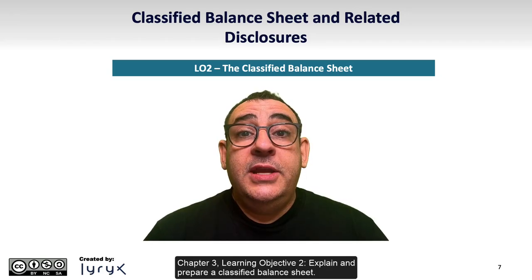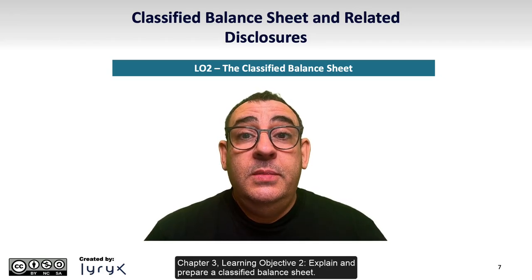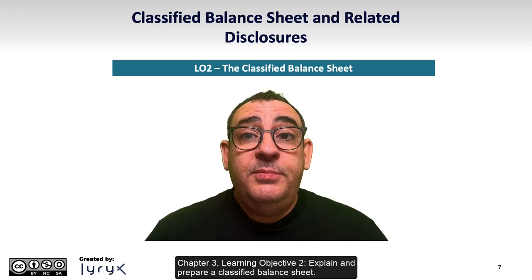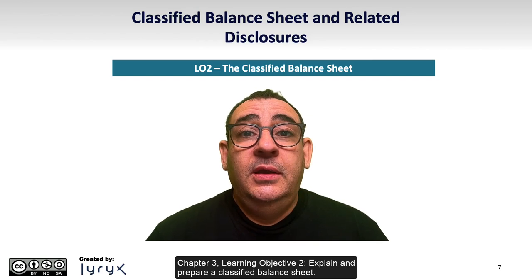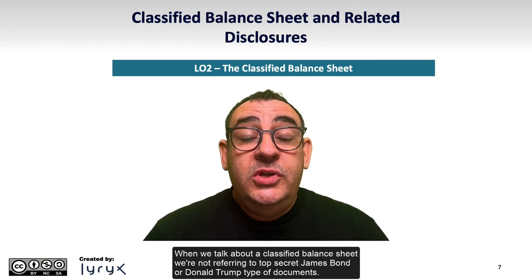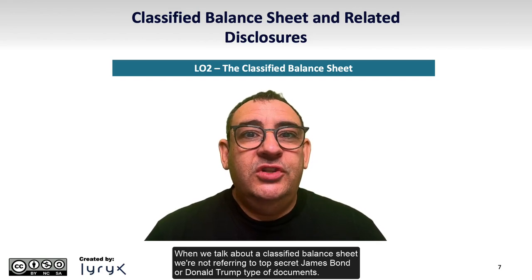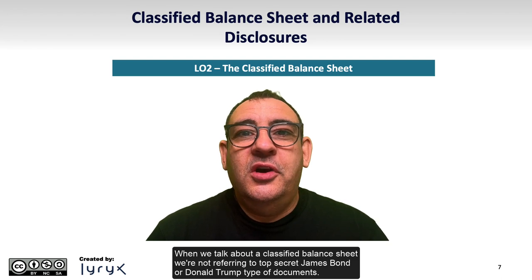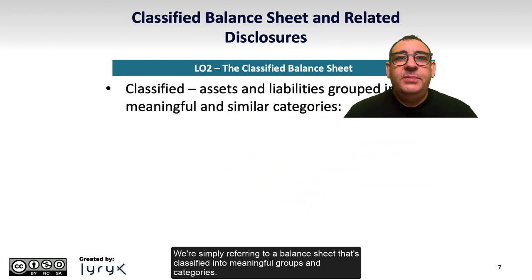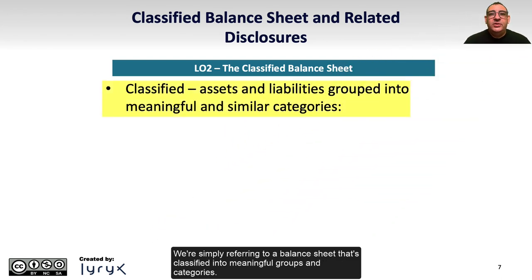Chapter 4, Learning Objective 2: Explain and Prepare a Classified Balance Sheet. When we talk about a classified balance sheet, we're not referring to top-secret James Bond or Donald Trump type of documents. We're simply referring to a balance sheet that's classified into meaningful groups and categories.